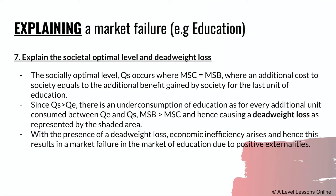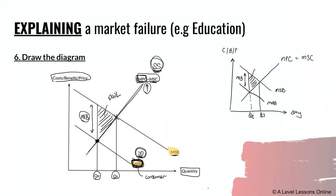The socially optimal level is QS, where MSC = MSB — when the additional cost to society equals the additional benefit for the last unit of education. Since QS is greater than QE, there is under-consumption of education. For every additional unit consumed between QE and QS, the marginal social benefit exceeds marginal social cost. This results in a deadweight loss — and hence economic inefficiency, causing market failure in education due to positive externalities.